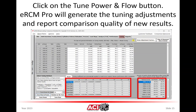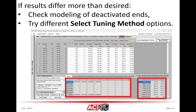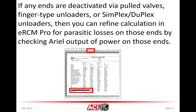ERCM Pro will then calculate the differences between the ERCM Pro performance predictions and the Ariel software predictions, generating coefficients for tuning. In general, after tuning to the Ariel data, ERCM predictions should be within plus or minus 1% of the Ariel performance for 98 to 99% of the data. If this is not as close as desired, you can check the modeling of deactivated ends or try a different tuning method instead of the speed and ratio linear method.